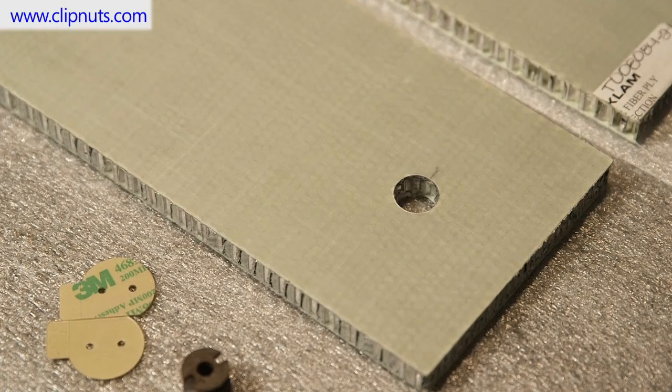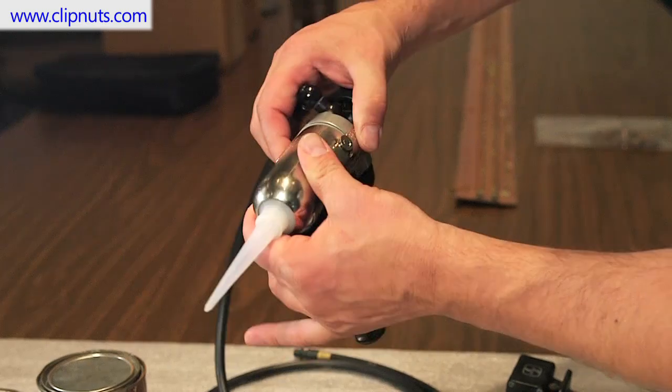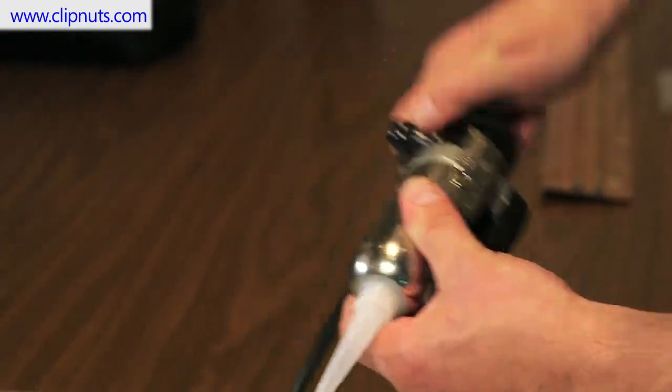First, we drill a hole into and through a honeycomb panel. Next, we prepare our epoxy adhesives, load it into a glue gun, and screw on its dispensing tip.